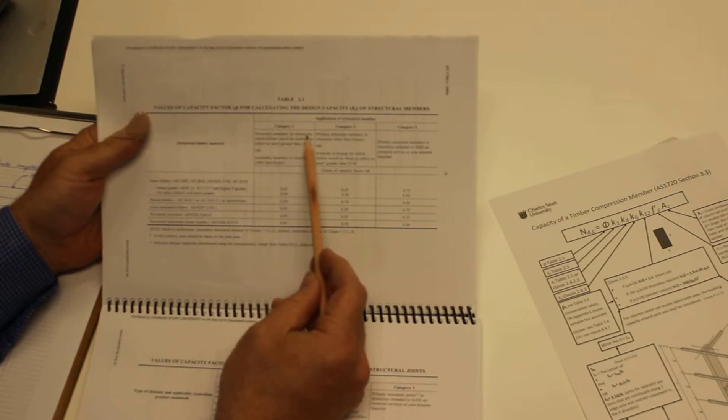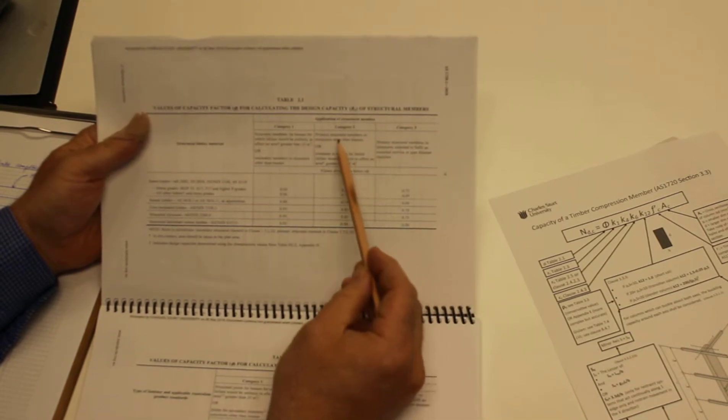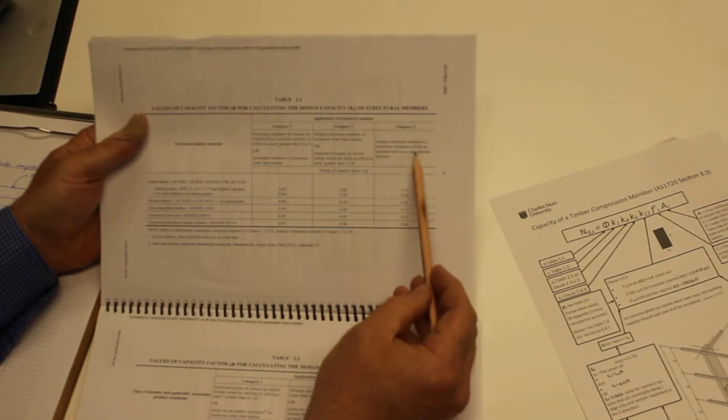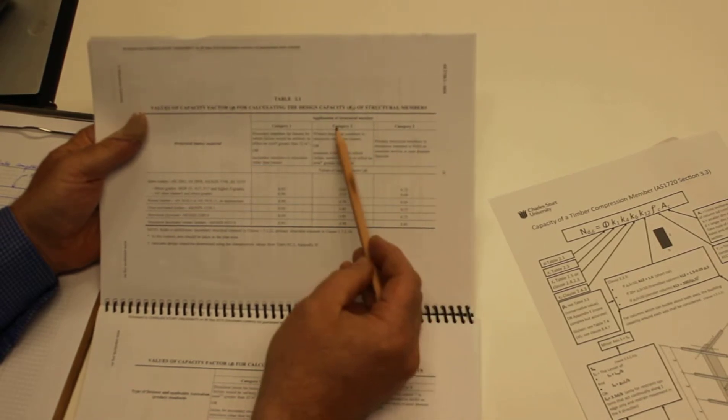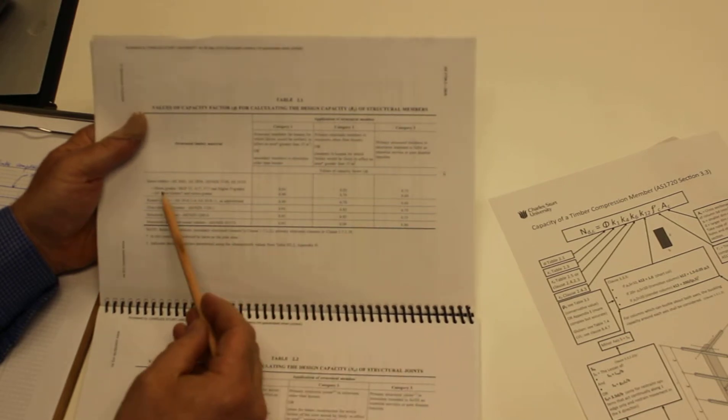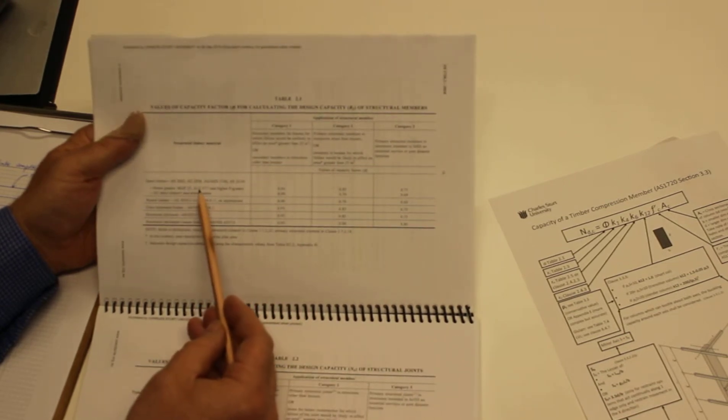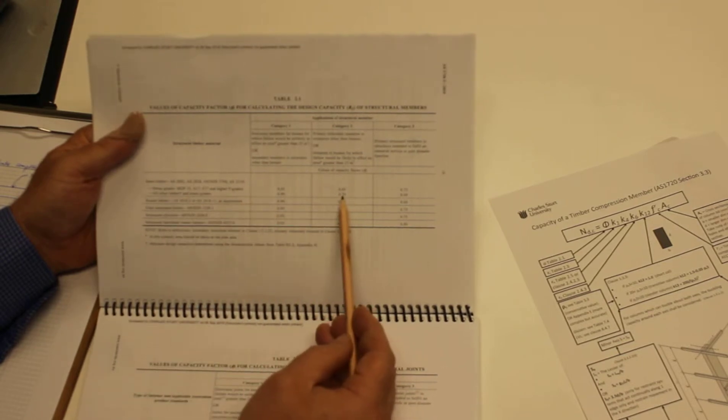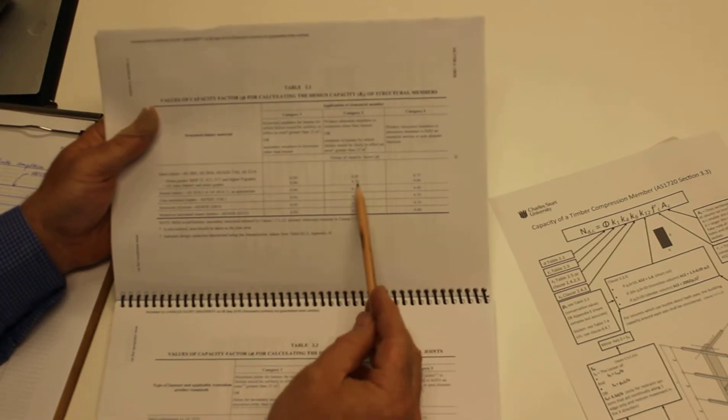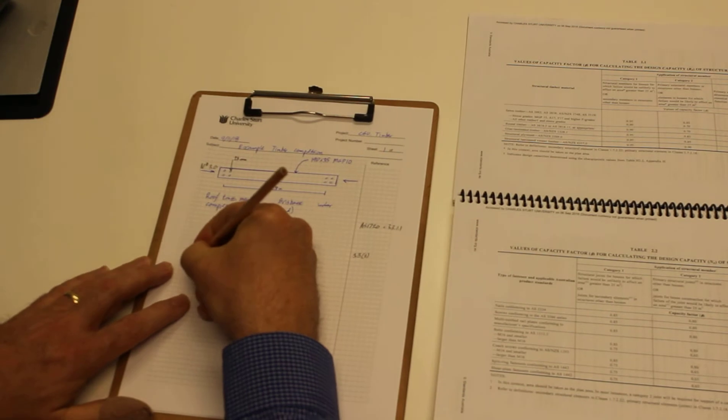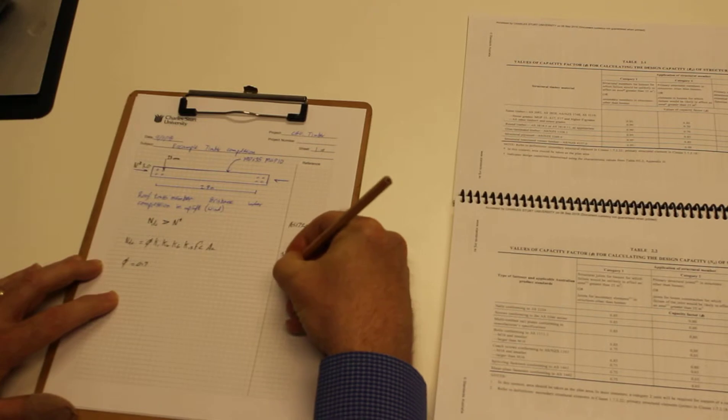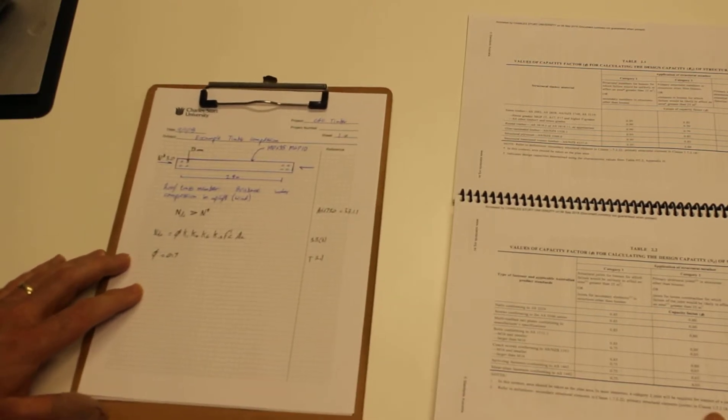This is the phi factor for calculating design capacity of structural members. Category 1 structural member for houses - no, it's not a house member. Other than house, it's in a building, not designed to fulfill post-disaster functions. So we're using stress grade MGP 15, 17, or higher, which gives us 0.85. All of the timbers and stress grades is 0.7, so our phi factor is actually 0.7. Phi equals 0.7, and we're referencing table 2.1 for that.